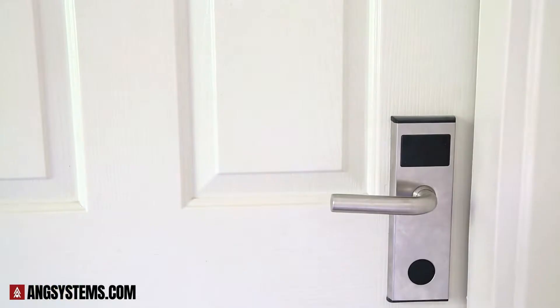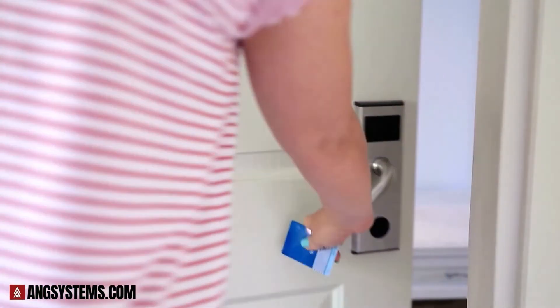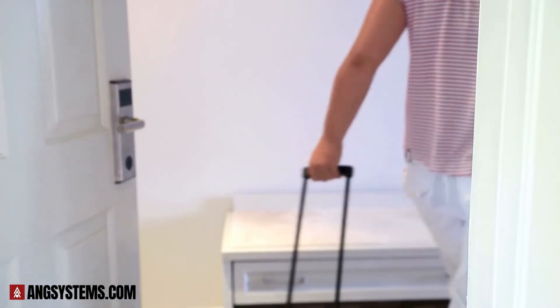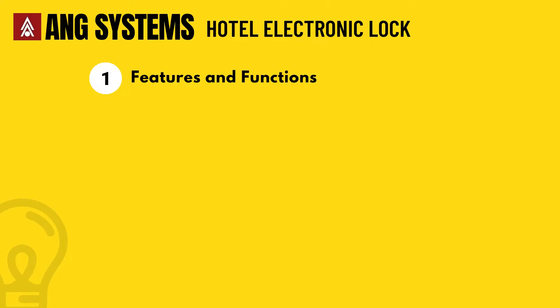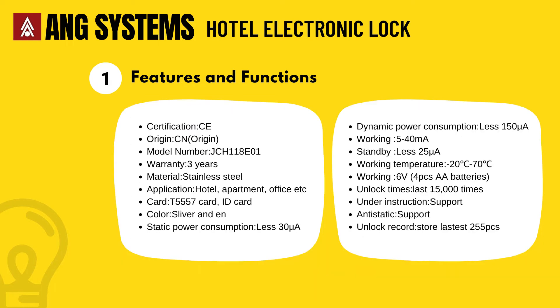Here is number two: Hotel electronic lock. Next we will go through the hotel electronic lock. First, we will show you the hotel lock features and functions. Number one: Features and functions. Here is a list of the features and functions.